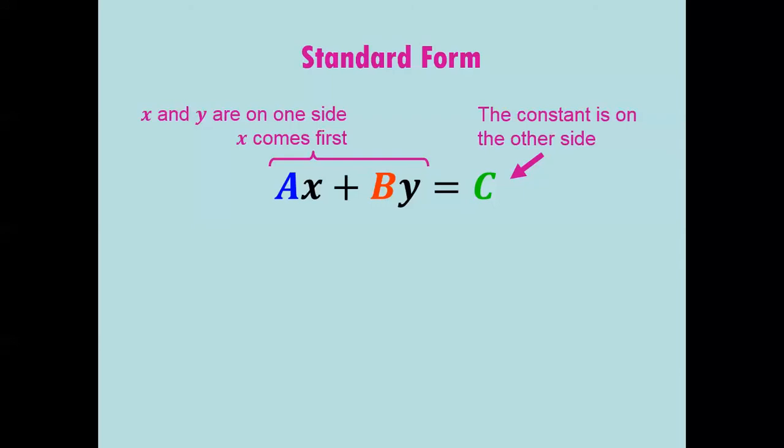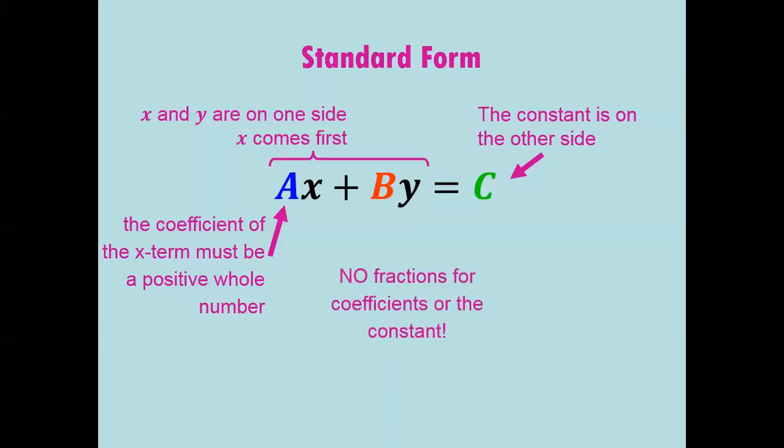We have some specific rules that have to be met for standard form. First of all, the coefficient of the x term must be a positive whole number. That a value can't be negative, and it has to be a whole number. We cannot have any fractions for coefficients. So the a value, the b value, and the c value all have to be whole numbers or integers.